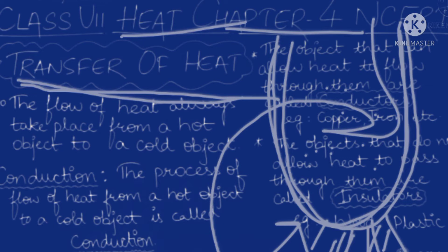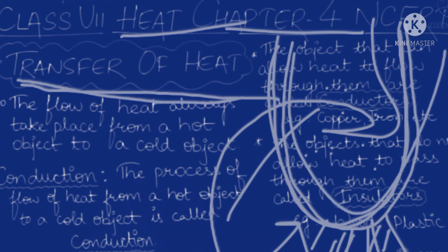Bahut saare substances aise hotey hain jo bahut jaldi garam nahi hotey. All substances do not get heated up quickly. The amount of heat absorbed depends on the kind of metal. Some substances get heat quickly, while some take longer. The flow of heat always takes place from a hot object to a cold object.